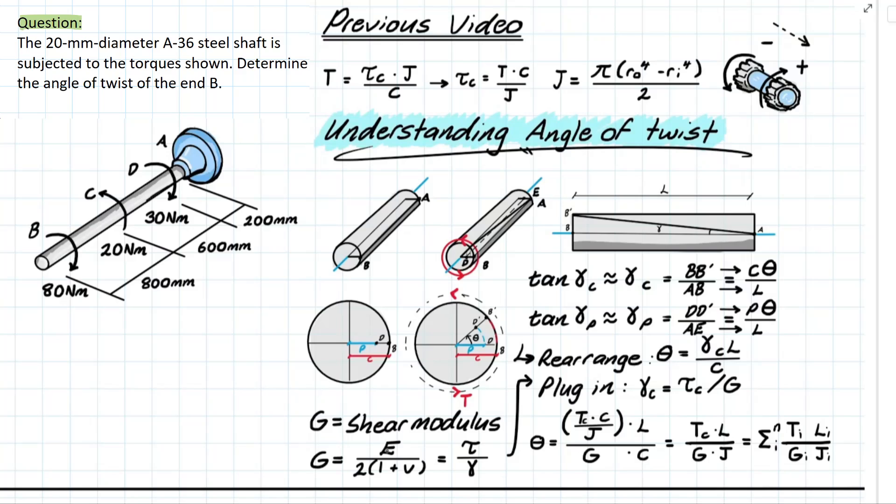And pretty much what this is is the modulus of rigidity and in the simplest terms it is a material property that takes the member and relates the ratio of shear stress developed to the shear strain developed. So as one is happening the other will follow.